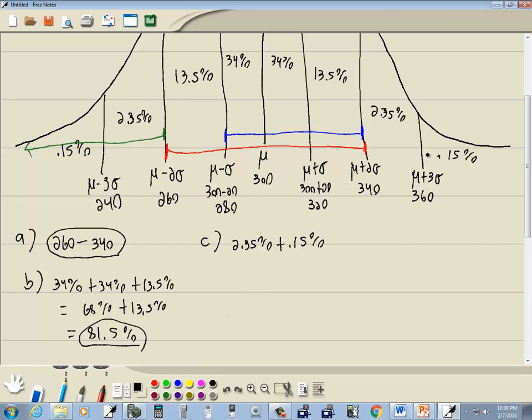So over here, here's 360, more than, choose the right color. More than 360, it would be the 0.15. Let's see, what is that, 0.3, 2.65? Yeah, 2.65.